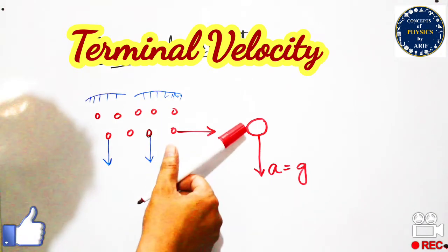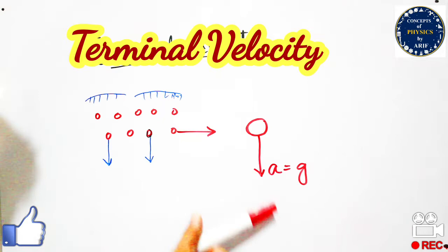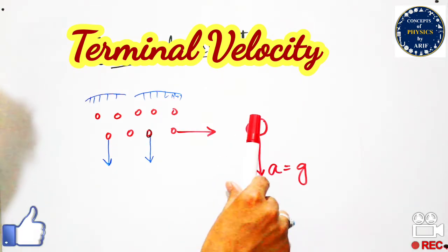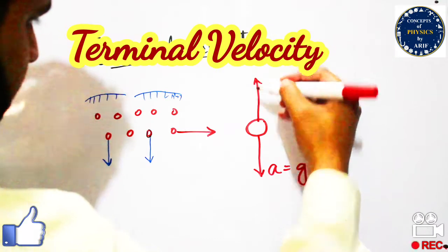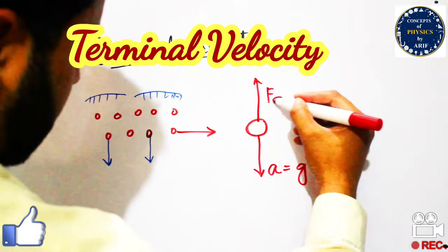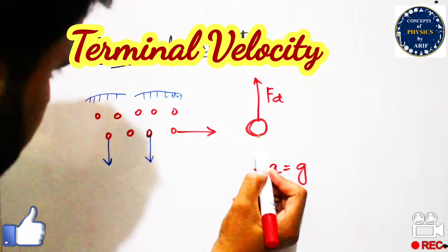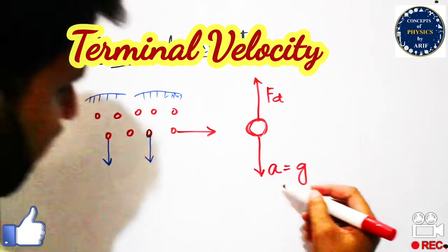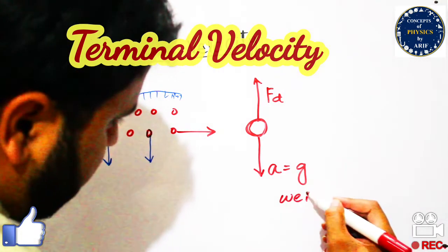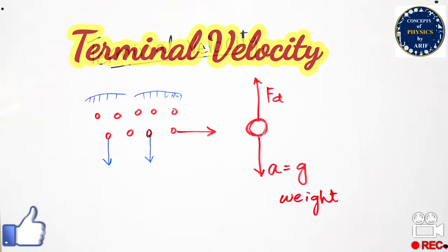As the velocity of the particle increases as it moves downward, the upward drag force acting on that particle also increases. After some time we will see that this particle remains suspended — meaning acceleration due to gravity or the weight of the particle becomes equal to the drag force.